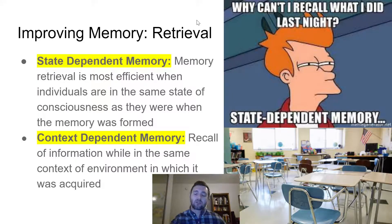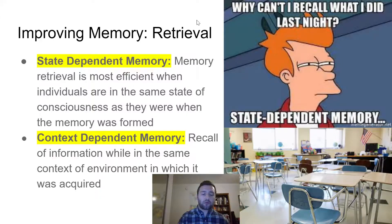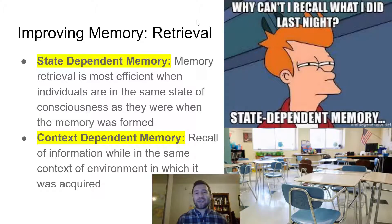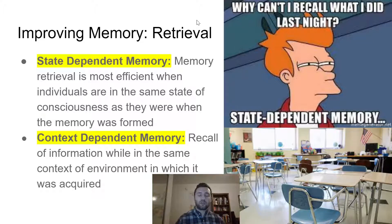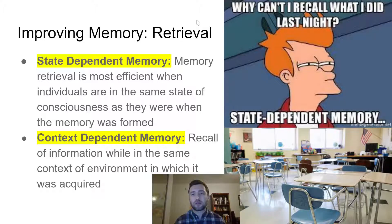We also have what we can call dependent memories. There are three types: state dependent, context dependent, and mood dependent — they all function basically the same way with slight differences. State dependent memory means memory retrieval is most efficient when individuals are in the same state of consciousness as when the memory was formed. We don't talk a ton about states of consciousness in AP Psych, but basically if someone is in the same state of consciousness, it helps them retrieve memories more easily than if they're in a different state.